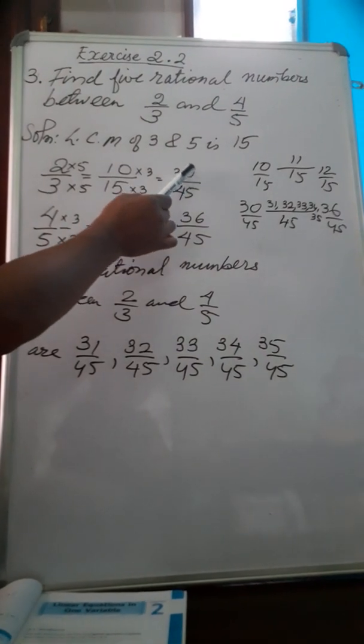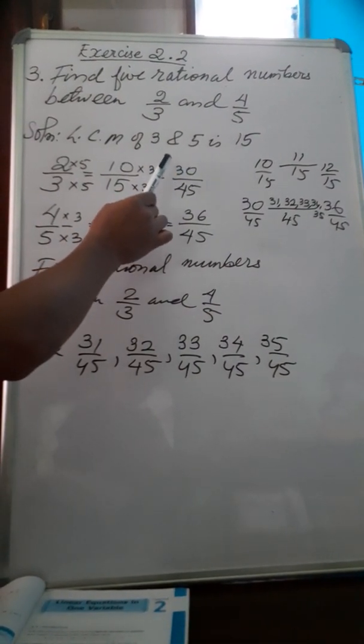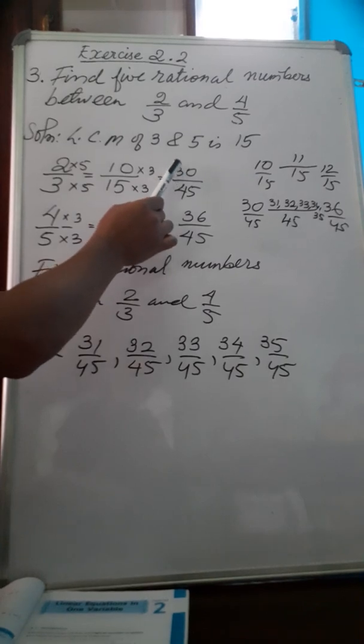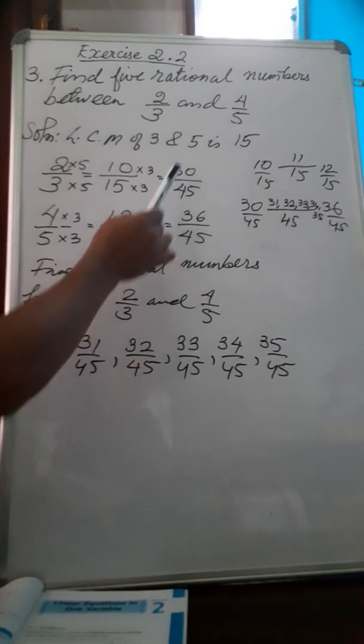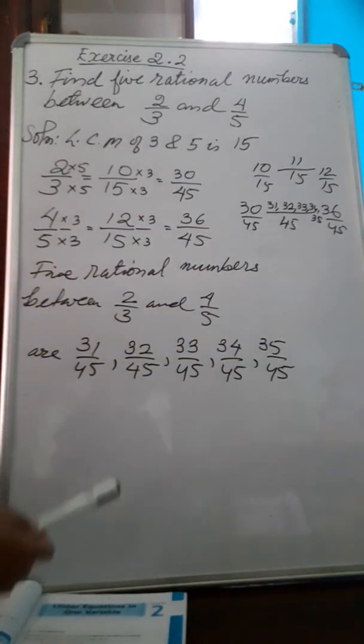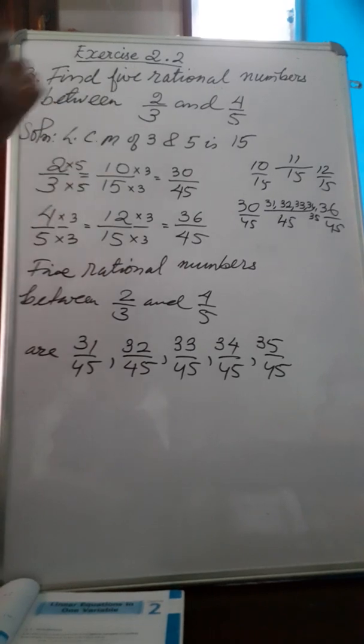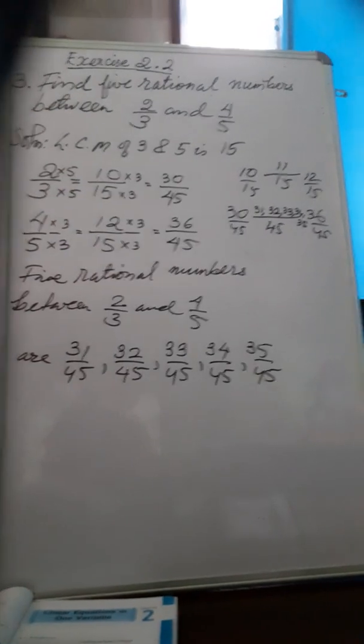So the 5 rational numbers between 2 by 3 and 4 by 5 are: 31 by 45, 32 by 45, 33 by 45, 34 by 45, and 35 by 45. By multiplying with a bigger number, you can find even more rational numbers between the two rational numbers.